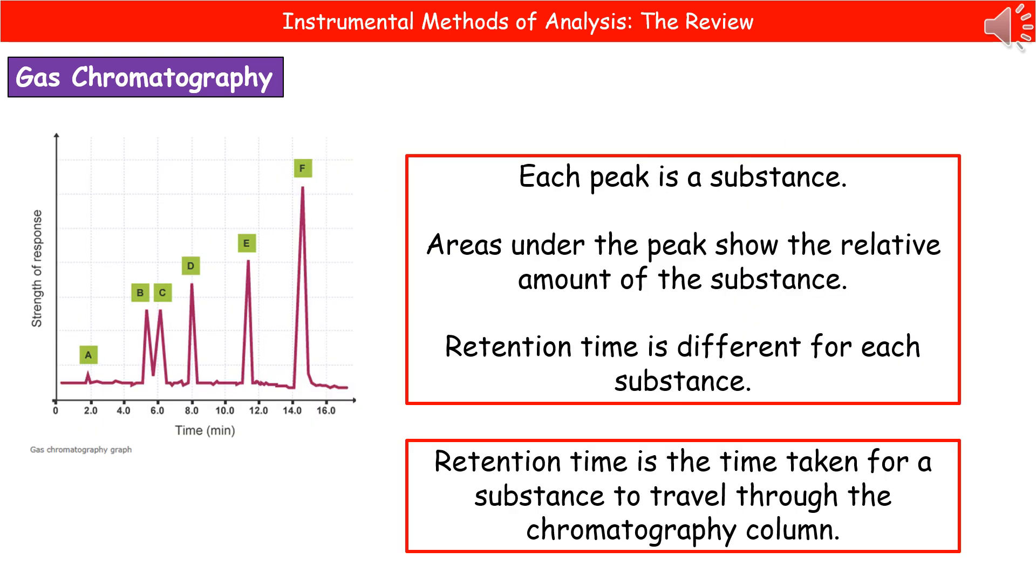Next thing we need to understand is how to actually interpret one of these gas chromatograms. First thing to know is that each of those little peaks you can see labeled A to F on the left there is a substance. The area underneath the peak actually shows us the relative amount of the substance. So the bigger the peak the more substance we actually had of that type. And the retention time which is along the bottom there on your x-axis, that's different for each substance. The retention time quite simply is the time it's taken for a substance to travel through the chromatography column.